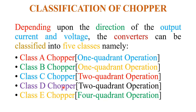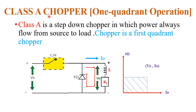In this video I will explain class A chopper. Class A chopper is basically a step-down chopper in which power always flows from source to load. It is a first-quadrant chopper — it is called first-quadrant because the output voltage and current are always positive.